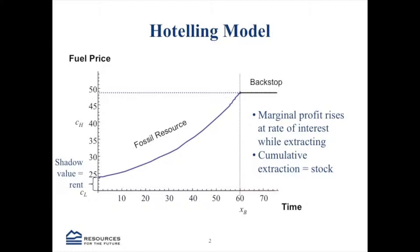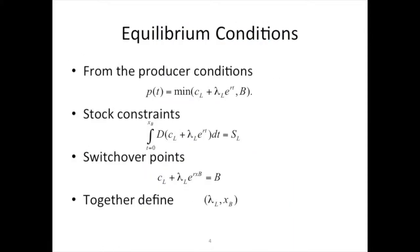Going back to the picture, we have an equilibrium price path: price is going to rise at a rate that keeps the discounted marginal profit constant. The total demand at this price over time has to equal your cumulative stock. The backstop comes in because consumers are going to consume whatever's cheaper. So the price of this resource can't rise above the backstop, or they'll switch to the backstop sooner and you won't have extracted everything in your stock. That means at the last point in time — we'll call this X_B, when you switch over to the backstop — these two prices have to be the same. That equation helps you pin down what your rent is.